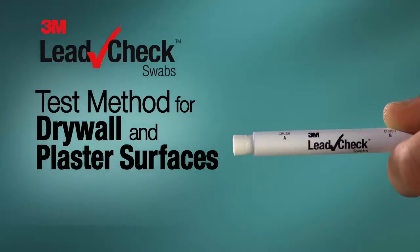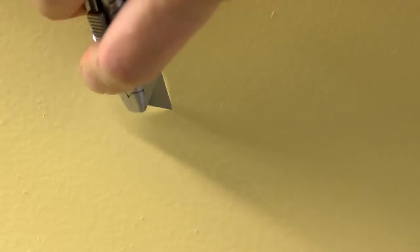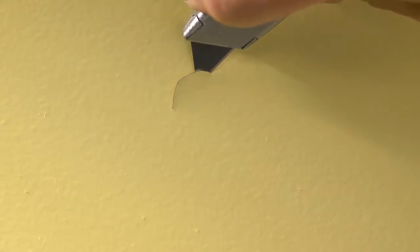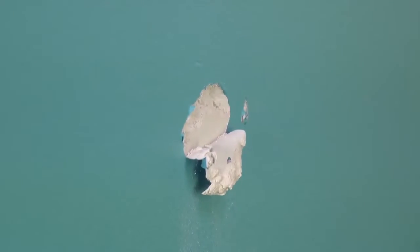This test method is for testing painted drywall and plaster surfaces for the presence of lead. Use the clean utility knife. Make a nickel-sized half-circle incision at a shallow angle of approximately 5 degrees. You must cut down to the gypsum core or to the bare plaster to ensure you have exposed all the layers of paint on the wall.